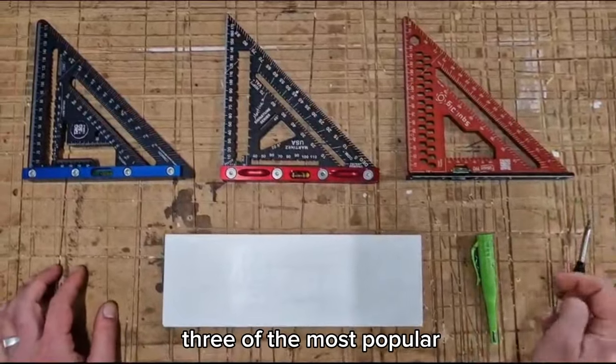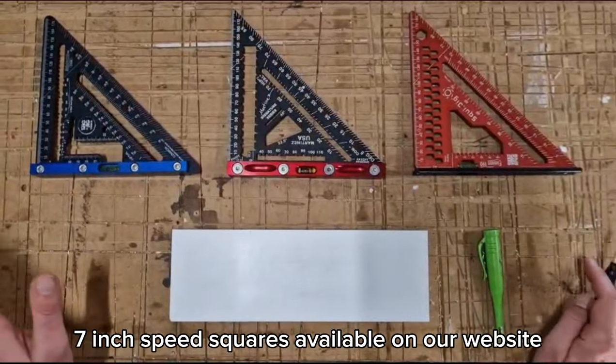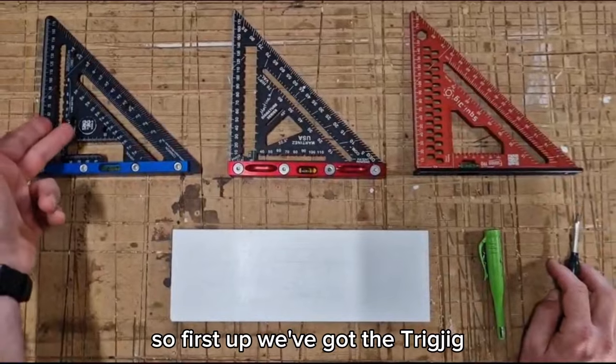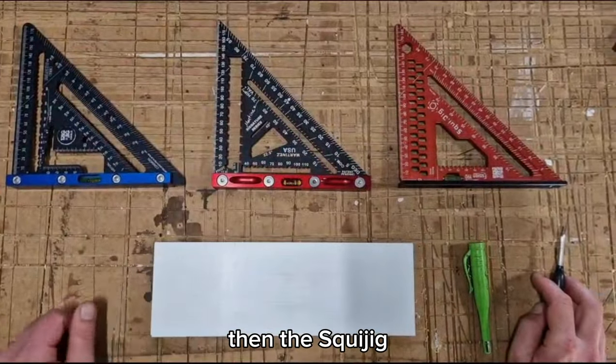Here's a quick rundown of three of the most popular 7-inch speed squares available on our website. So first up we've got the Trig Jig, then the Martinez, then the Squee Jig.